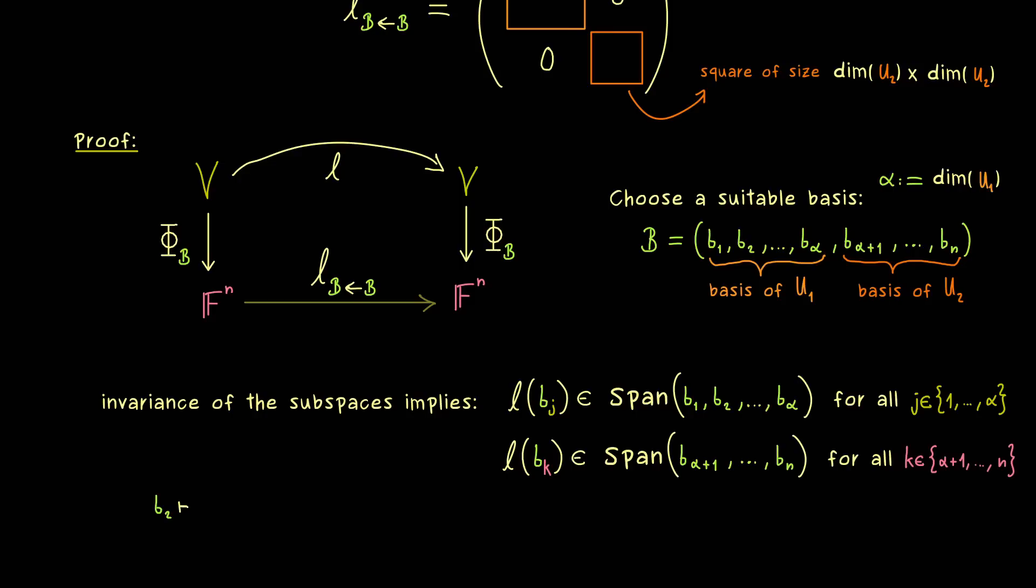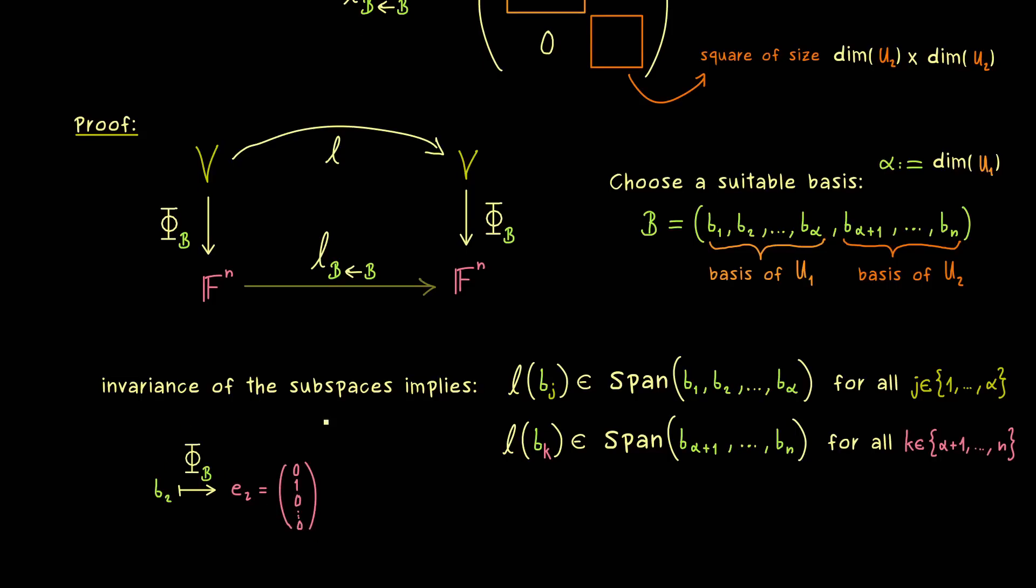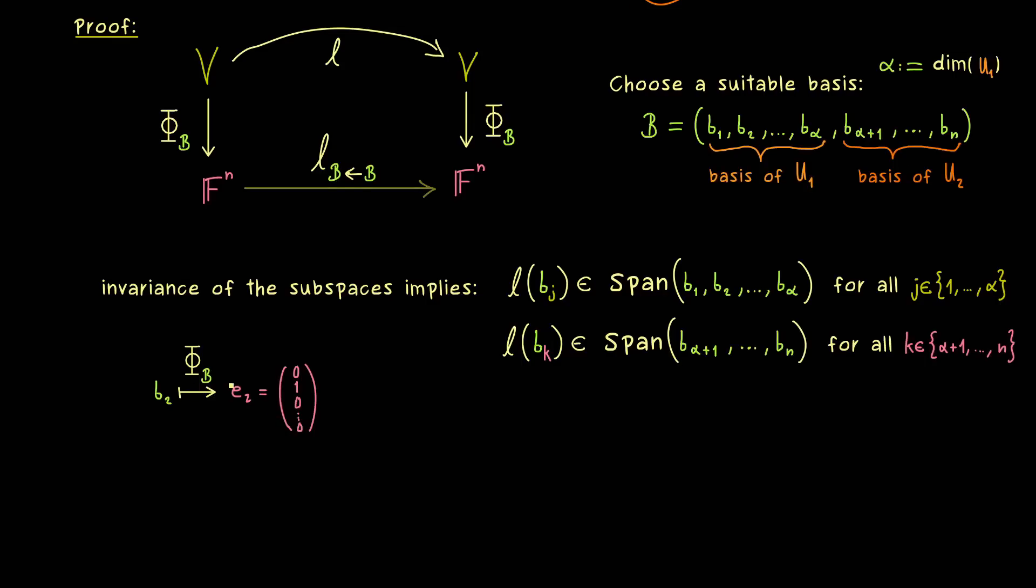The basis isomorphism translates a given basis vector to a canonical unit vector. As a reminder, b2 would be mapped to e2, which is the vector in F^n that starts with a 0, then comes a 1, then only 0s. A similar thing happens to all basis vectors under our map Phi_B. Therefore we can translate and rewrite the element relation for our matrix representation L_BB. If we apply ej to it for j from 1 to alpha, we land in the span of the first canonical unit vectors.